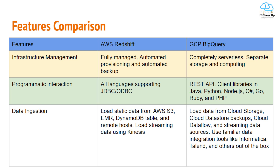On programmatic interaction: AWS Redshift supports all languages with JDBC and ODBC. GCP BigQuery supports REST API and client libraries in Java, Python, Node.js, C#, Go, Ruby, and PHP. On data ingestion: you can load static data from AWS S3, EMR, DynamoDB, and remote hosts to Redshift, and streaming data using AWS Kinesis. For BigQuery, you can load from Cloud Storage, Cloud Datastore backups, Cloud Dataflow, and streaming sources, and use familiar integration tools like Informatica and Talend.